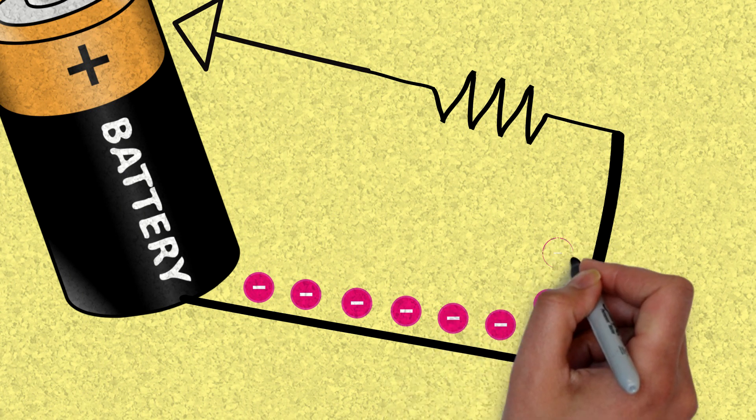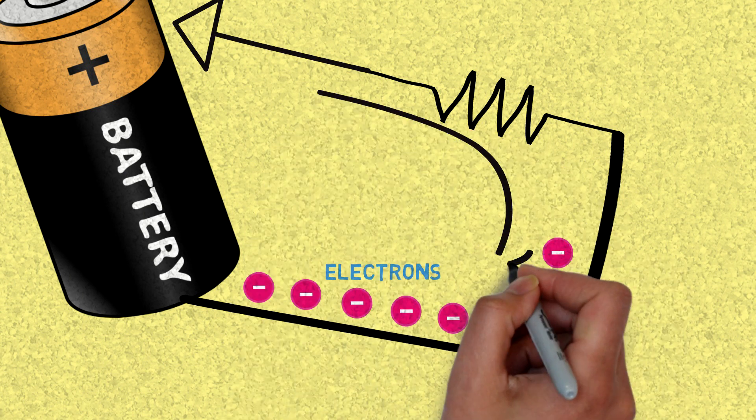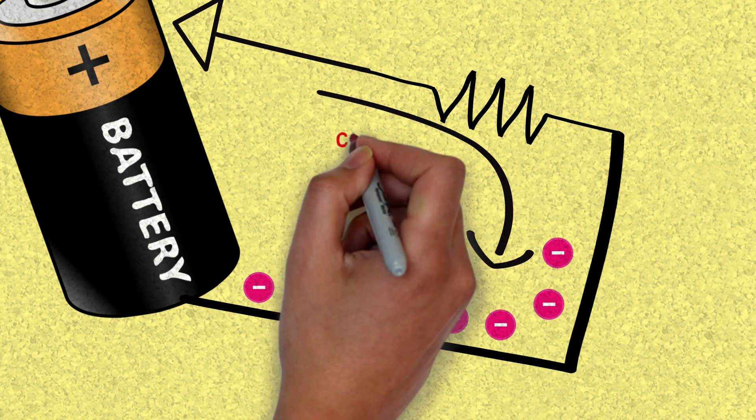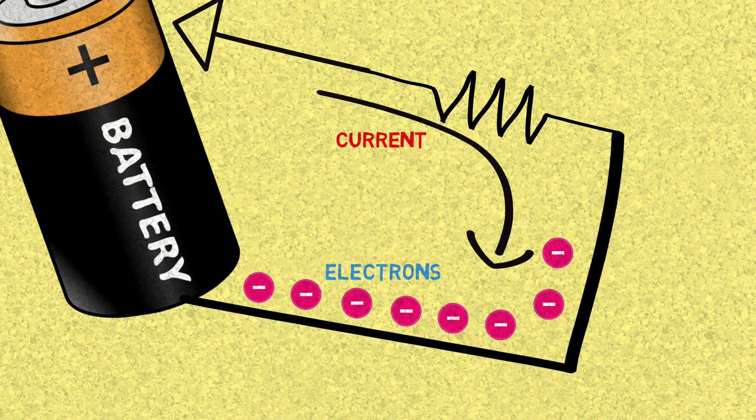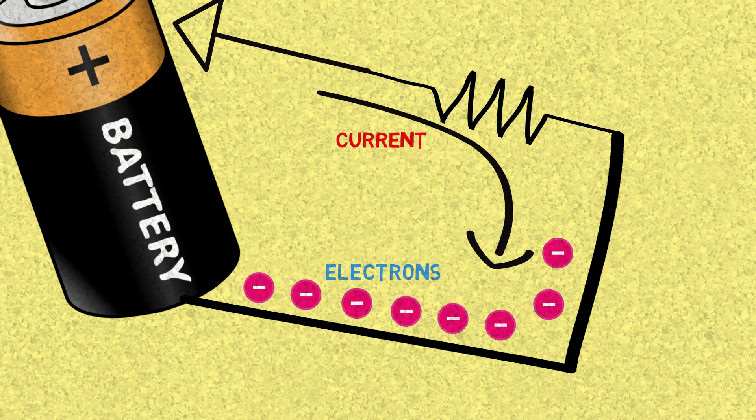When the electrons move, that causes an electrical current to flow through that wire. The more electrons that are flowing, the higher the current in amps. So the number of electrons that are moving is a key point for this explanation. Keep that in mind.